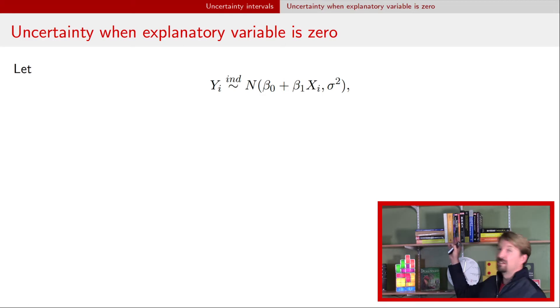Just as a reminder, this is our simple linear regression model. So we have a response Y, it's independent, normally distributed, the mean is beta naught plus beta 1 times xi, and the common variance of sigma squared. We talked in that previous video about beta naught being interpreted as what happens when the explanatory variable is zero. The expected value of the response Y when X is zero is just beta naught.